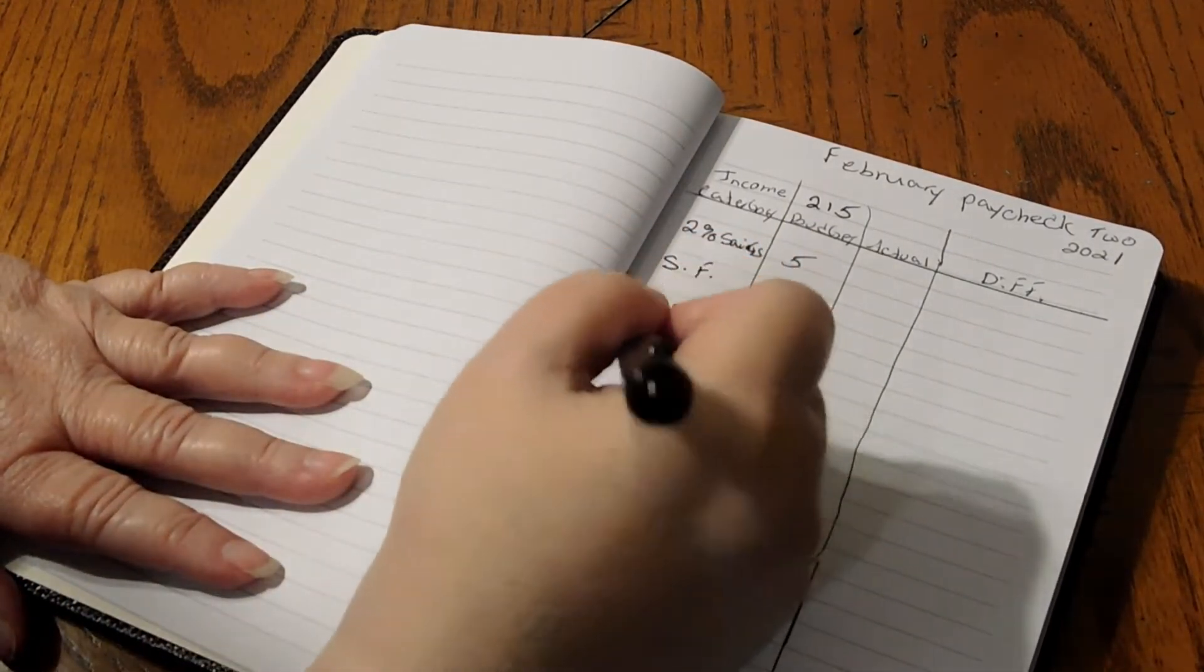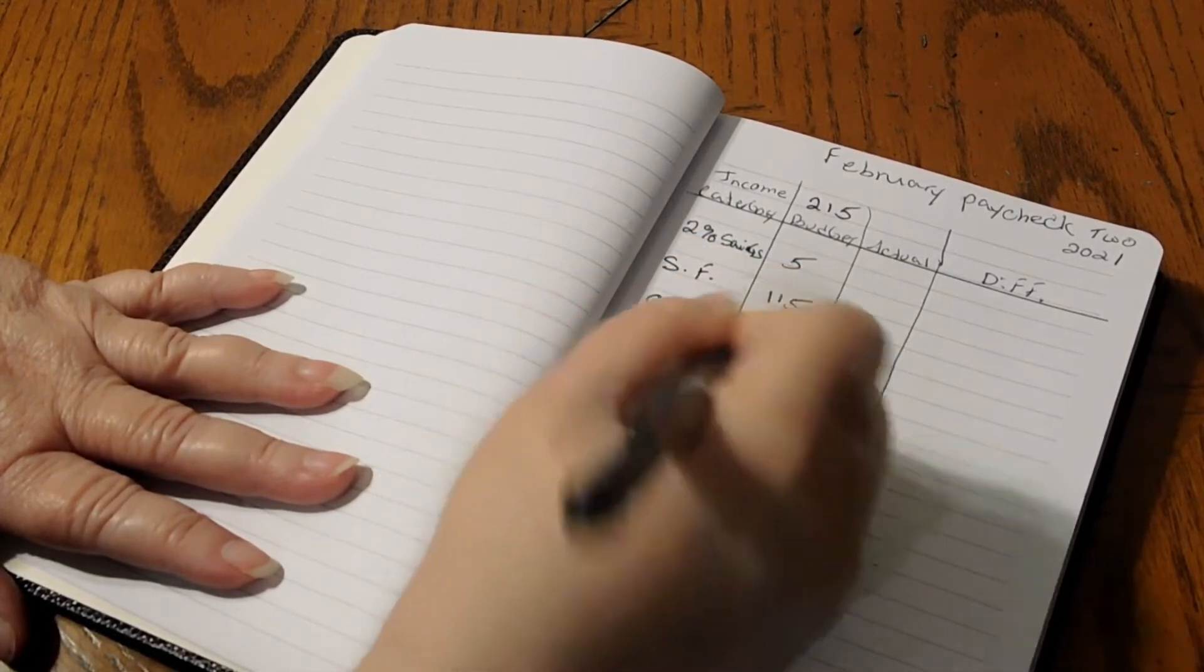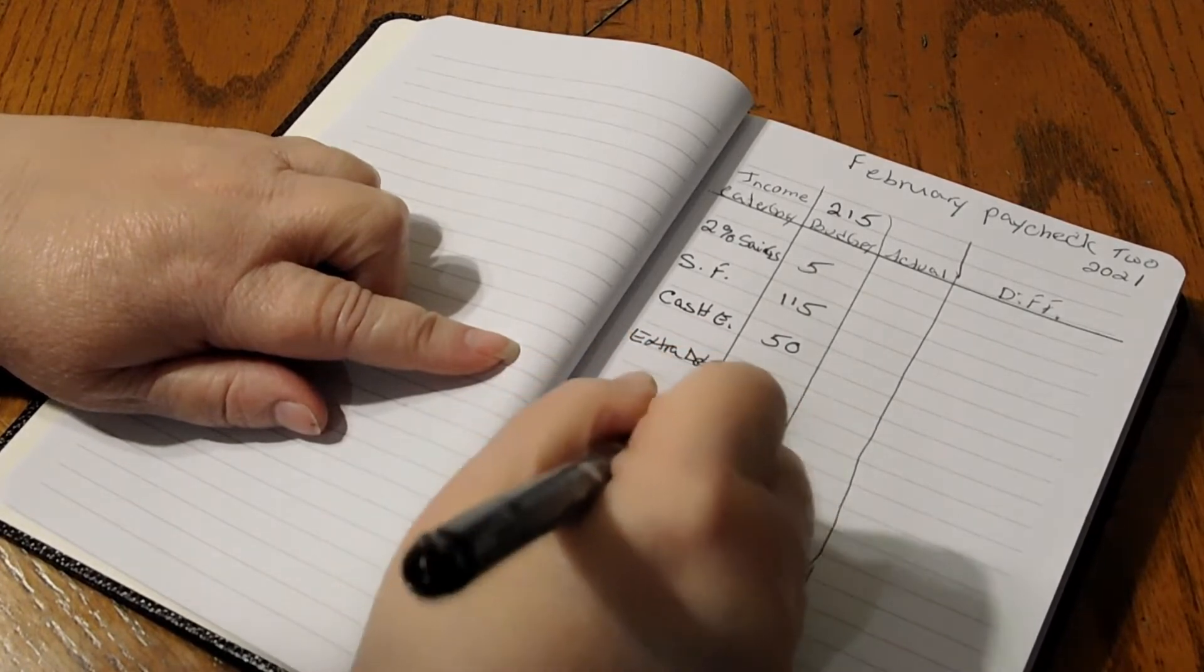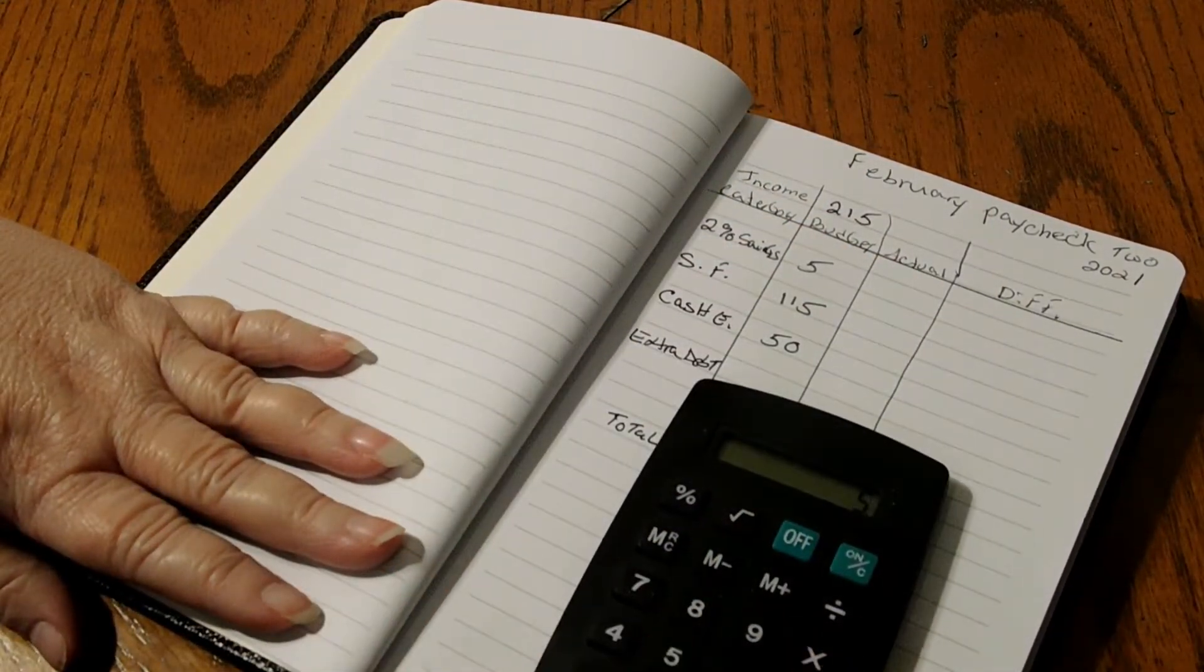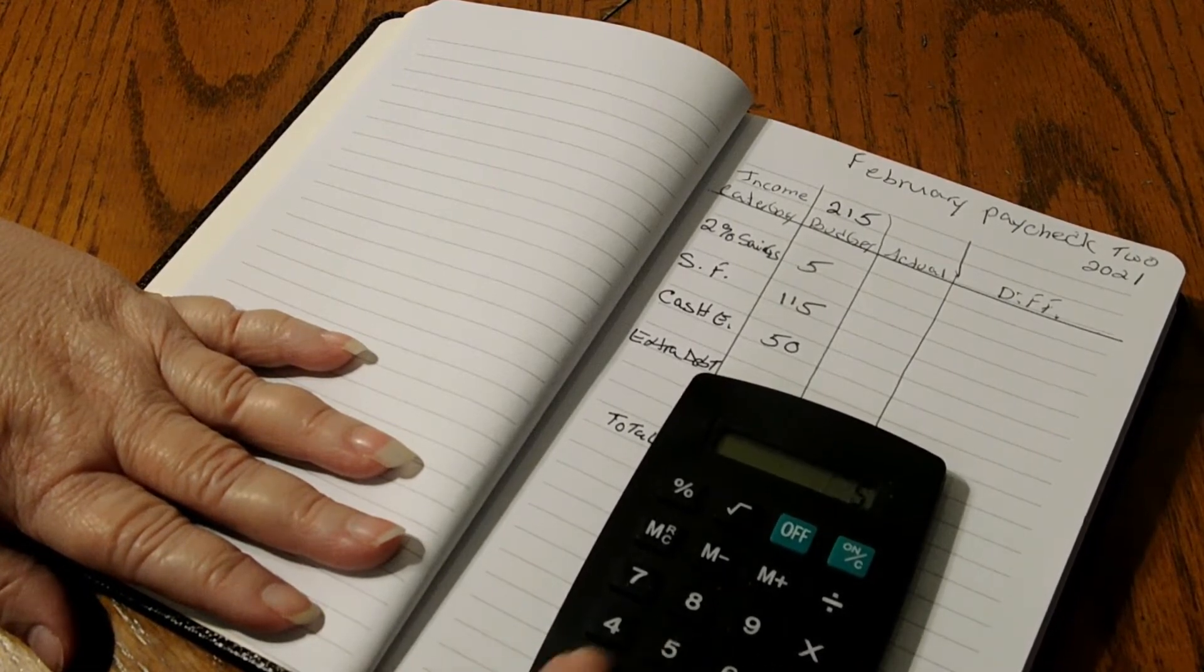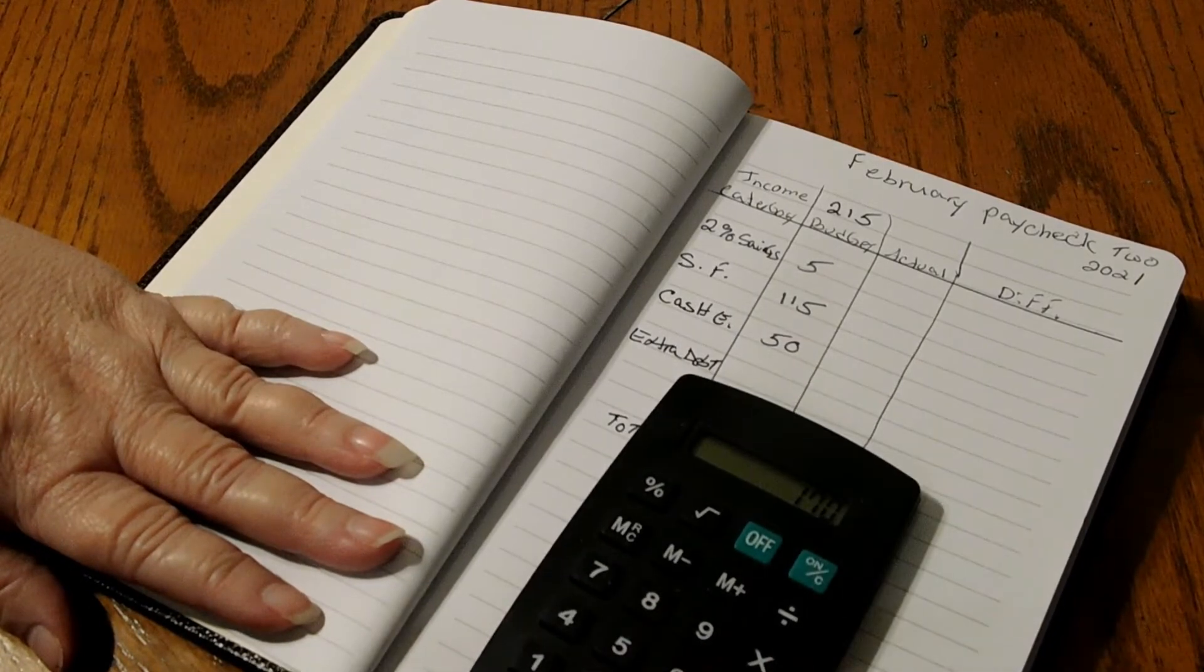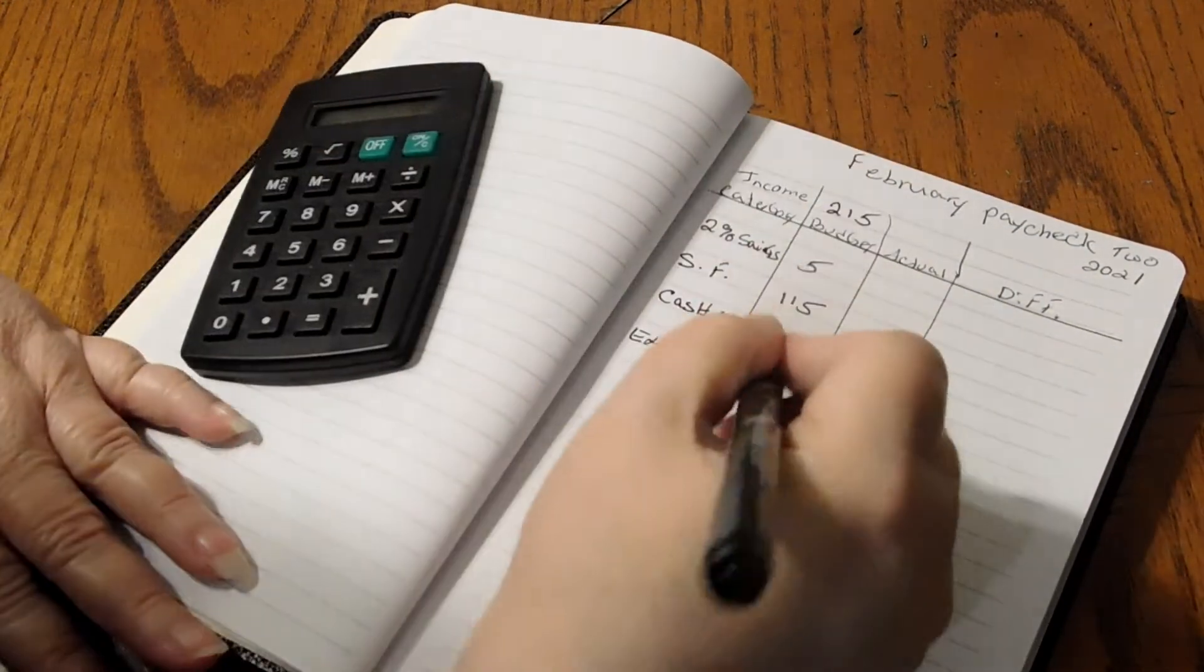So we'll just see what our extra debt is. We'll just go extra debt down here, and then we'll figure out how much it's going to be. Then I'm going to leave a space and put the total down here. So let's add this up. We got 5 plus 115 plus 50 equals 170. So if we minus the 215, $45 for an extra debt payment.